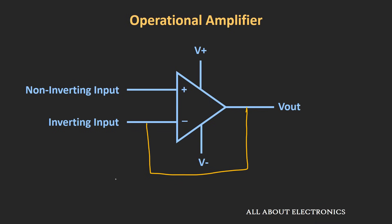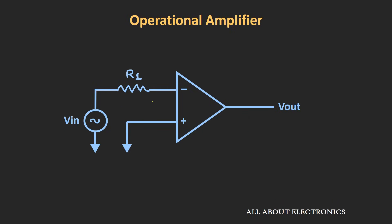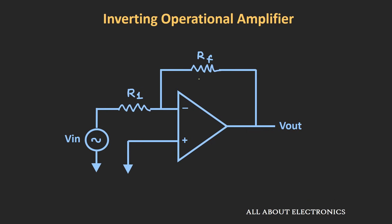There are three ways to apply the input to this op-amp. First, applying the input to the non-inverting terminal and grounding the negative terminal. Second, providing the input to the inverting terminal and grounding the positive terminal. Third, providing input to both terminals. We will focus on the case where the input is applied to the inverting terminal through resistor R1, with negative feedback from the output to the inverting terminal via feedback resistor RF. This configuration is known as the inverting op-amp configuration. Now let us find the relationship between the output and input voltages.